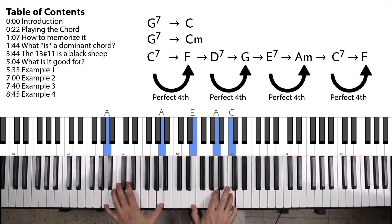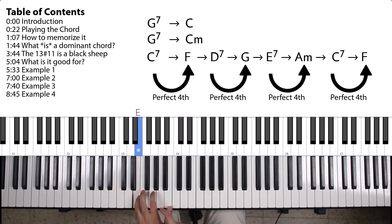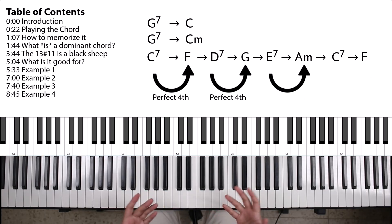E dominant 7, resolving to an A minor. So, take an E dominant 7, go up a perfect 4th, you get an A. And so on, and so on.